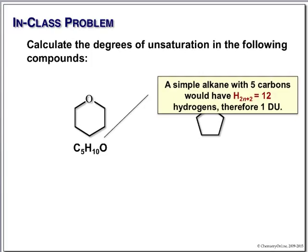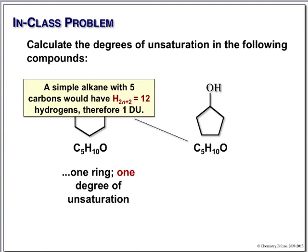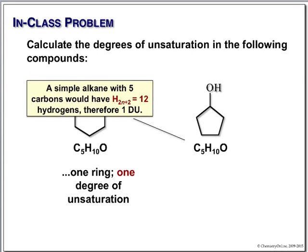Here's an alcohol with 5 carbons and an OH, giving C5H10O — they're isomers. Again, we should have 12 hydrogens; we simply ignore the oxygen. We need two more hydrogens, therefore this has 1 degree of unsaturation.